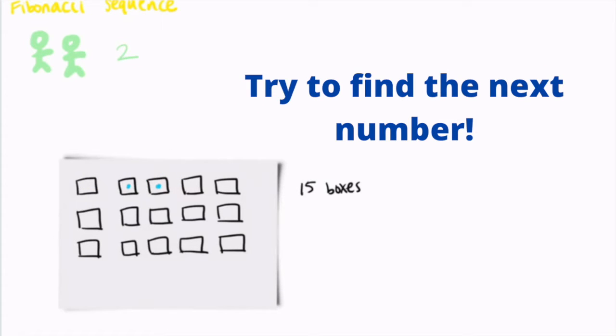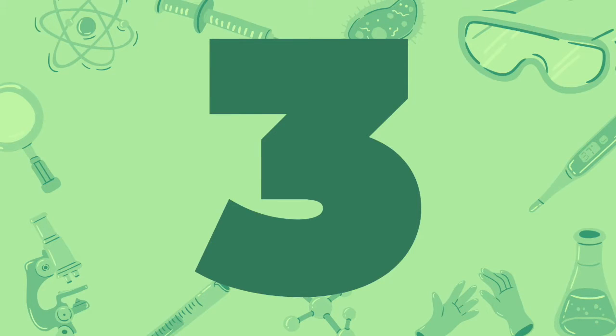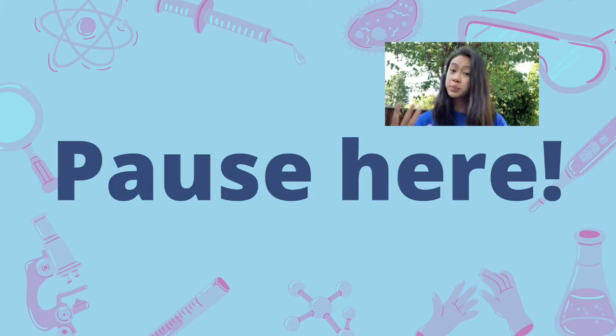Challenge yourself now. Try using only the number of circles you already have to find the next number in the sequence. Pause here, but play if you'd like more hints. If you are stuck, write 2, 3, and 5 in the next boxes. Can you figure out the pattern now? Pause here, and play for the answer key.